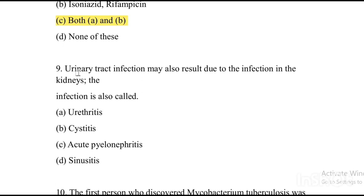Next question: Urinary tract infection may also result due to infection in the kidneys. This infection is also called as — Option A: pyrhythritis. Option B: cystitis. Option C: acute pyelonephritis. Option D: none. The answer is Option C, acute pyelonephritis.